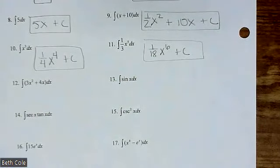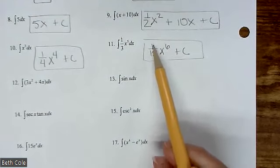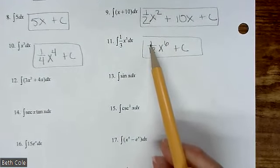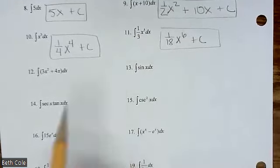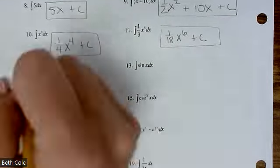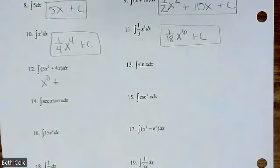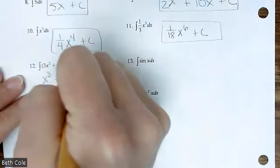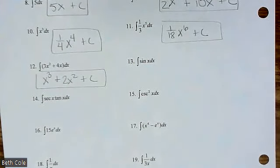And you can always check your answer by doing the derivative. Here, look it. If you were to do a power rule on this, if you bring the 6 down, what is 6 18ths? 1 third right there and then you'd have x to the fifth. All right, look at number 12. You need a function that if you did the derivative, you would get 3x squared. Good, good. x to the third plus 2x squared plus c. Good. And you can check it by doing the derivative.